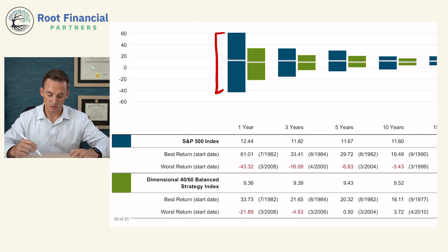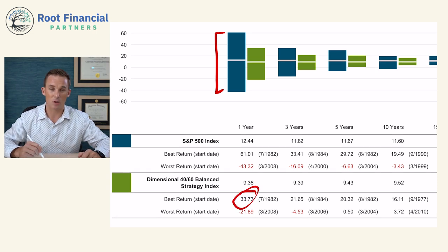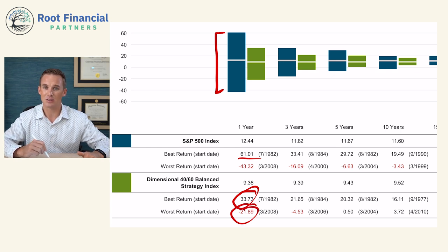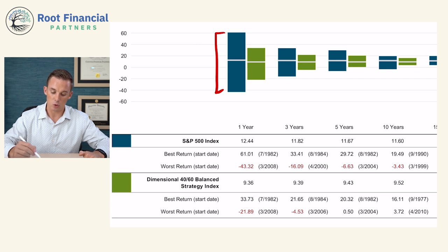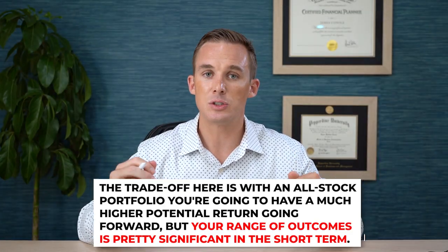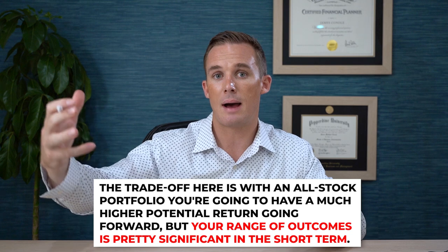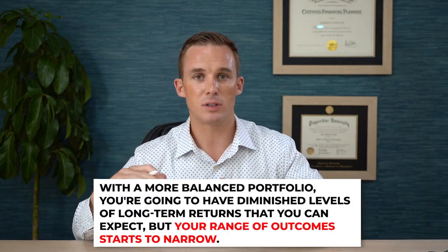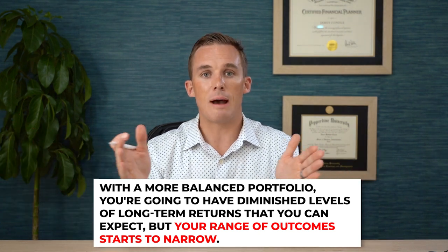Compare that to the balanced strategy. The best one-year return is not as high — around 34% compared to the S&P 500's 61%. But the worst one-year experience is also not as low — down 22% compared to the S&P 500's down over 43%. The range of returns is much narrower. The trade-off is that with an all-stock portfolio you have a much higher potential return, but your range of outcomes is pretty significant in the short term. With a more balanced portfolio, you have diminished long-term returns, but your range of outcomes starts to narrow.